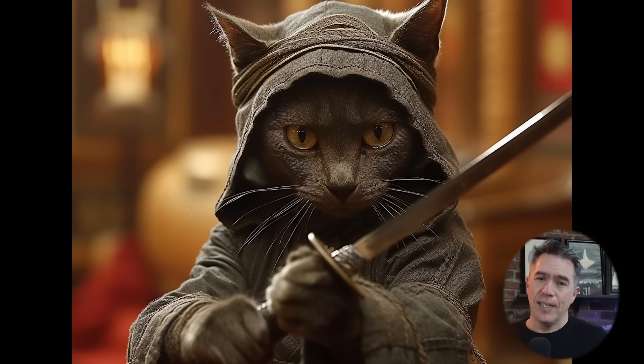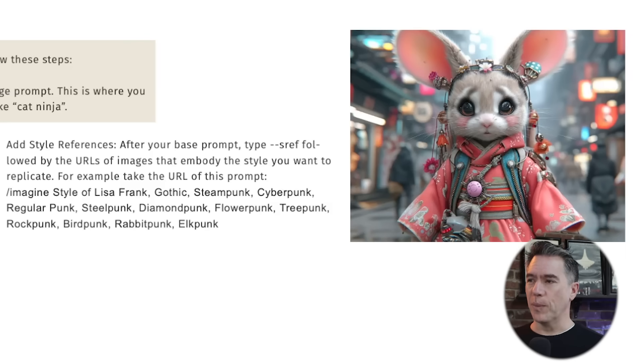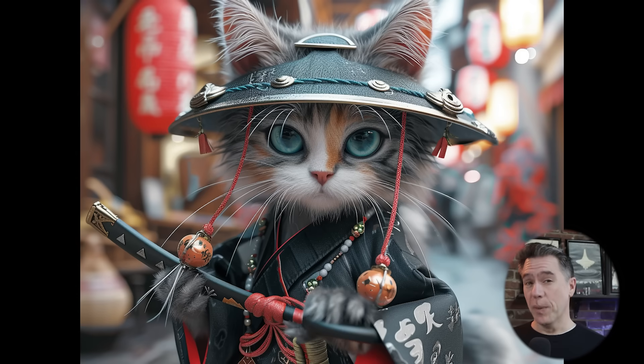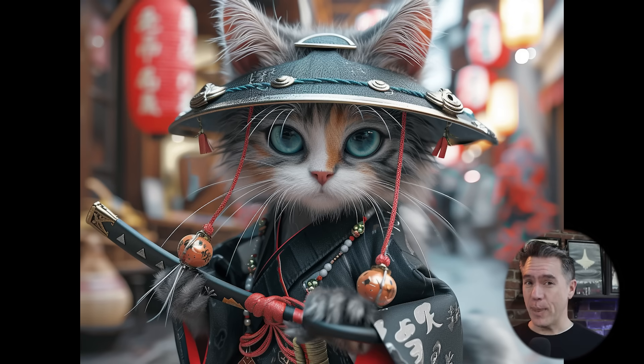For example, taking a very simple prompt like 'cat ninja' and then taking the URL of something with a more complex prompt — like this adorable rabbit in the style of Lisa Frank, gothic steampunk — and combining --sref along with our basic prompt yields this adorable but deadly kitty. This guy's tail is doing the cat 'don't mess with me' thing.